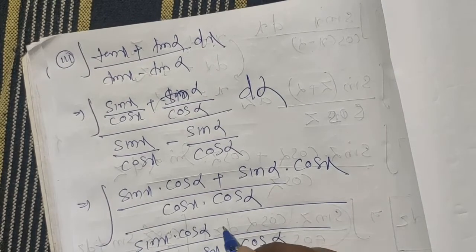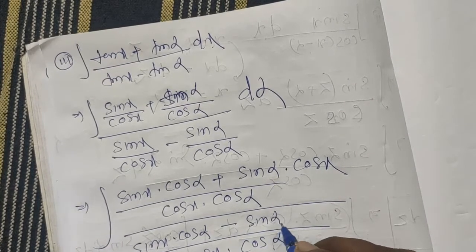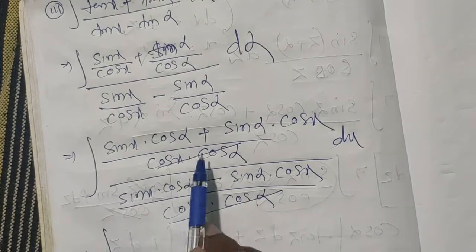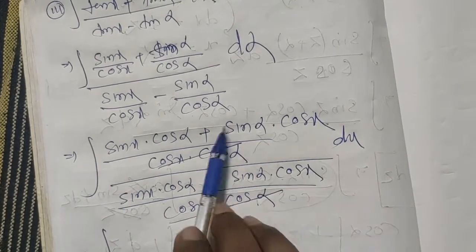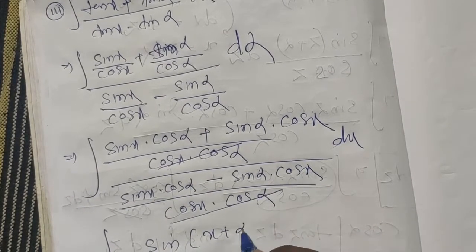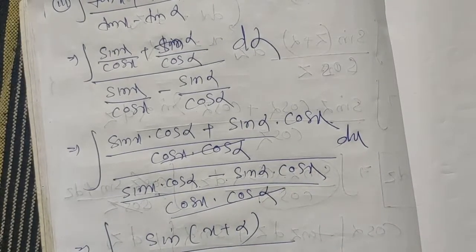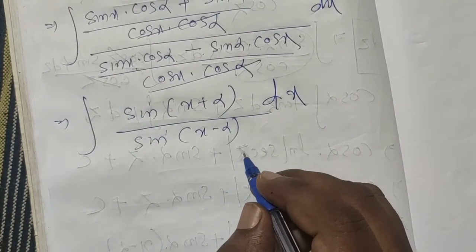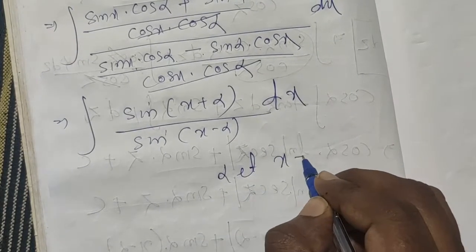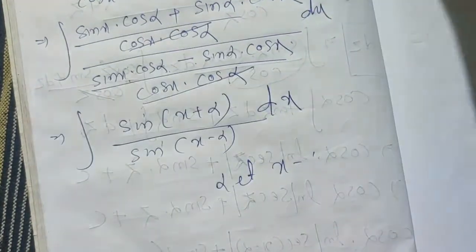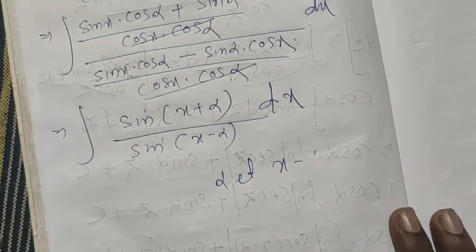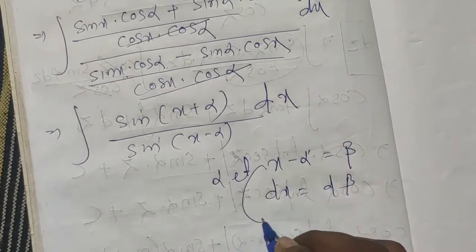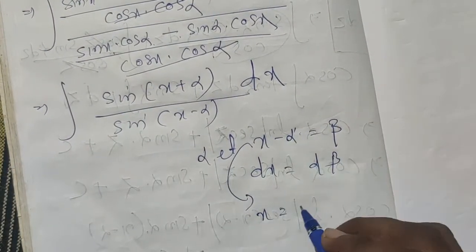After simplification, the numerator becomes sin x cos alpha plus sin alpha cos x, which is sin(x plus alpha), and the denominator becomes sin x cos alpha minus sin alpha cos x, which is sin(x minus alpha). So we integrate sin(x plus alpha) by sin(x minus alpha) dx. Let x minus alpha equal beta, so dx equals d beta and x equals beta plus alpha.